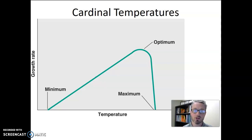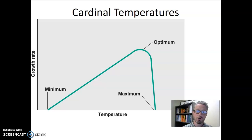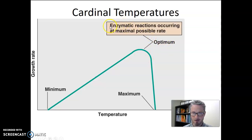We can use those temperatures to classify microorganisms. But first, let's think about why these temperatures exist. A bacteria is trying to grow in its environment — it's collecting nutrients, doing chemical reactions to build new cellular components, doubling in size, and then dividing into two cells. At the optimum temperature, that process is happening as fast as it possibly can, meaning the enzymatic reactions and building of new cellular components are happening at the absolute maximum rate.